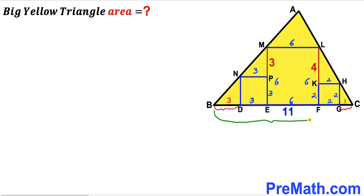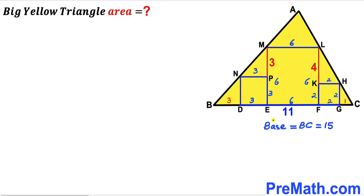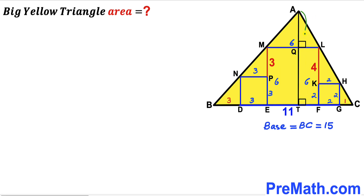The total base BC equals the sum of three individual lengths: 3 + 11 + 1 = 15 units. So the base BC turns out to be 15 units. Now our task is to calculate the height of the triangle. I have dropped perpendicular AT onto base BC. The vertical length QT equals the side length of the large square, so QT is 6 units. We now need to calculate the vertical length AQ.